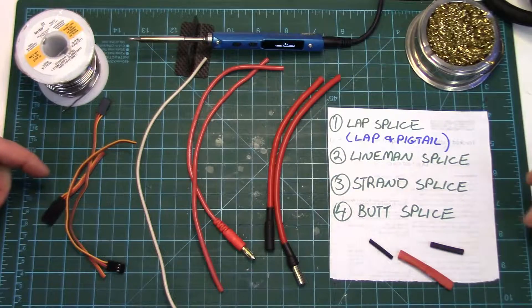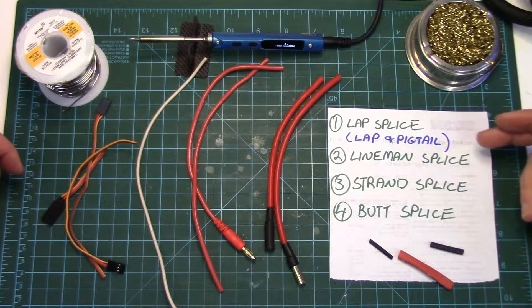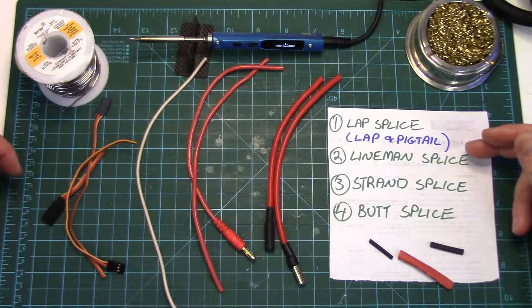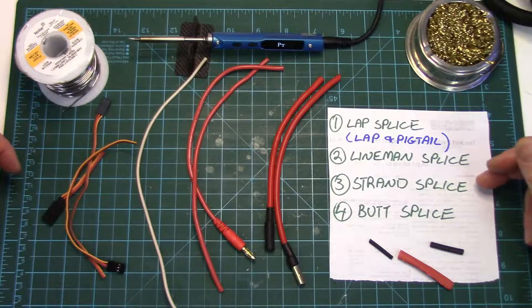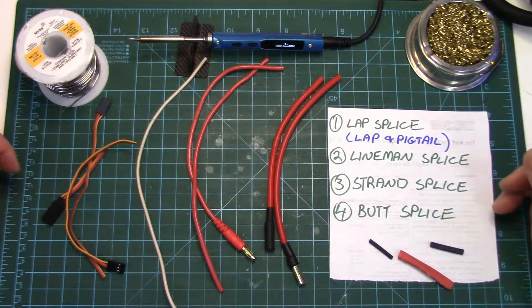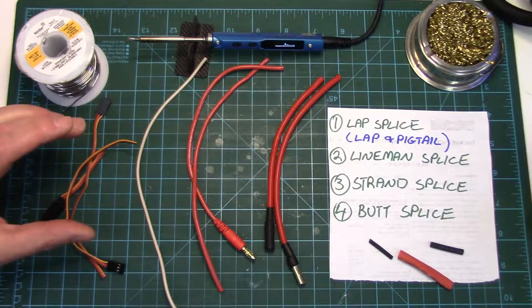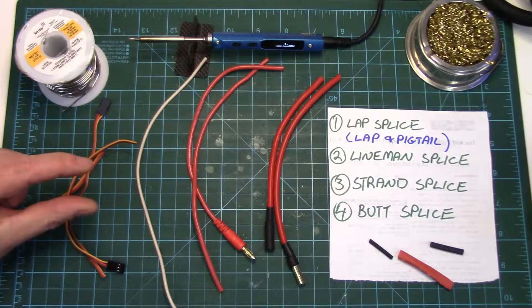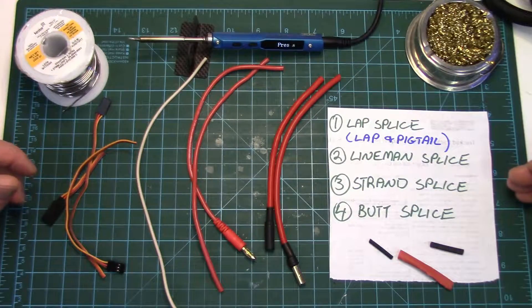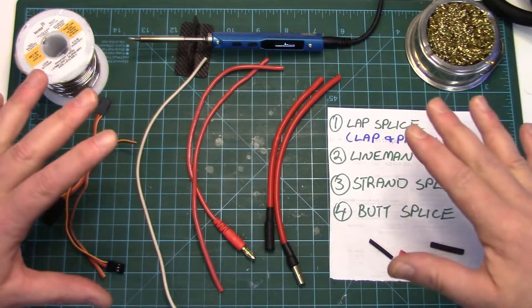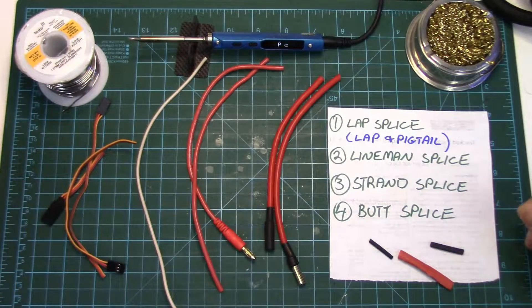Basically we're going to be taking them in order. We're doing a lap splice with a pigtail, a lineman splice, a strand splice and a butt splice. Depending on the size of wire you have, the length of wire you have to work with and the application will largely dictate what splice type you use. There's not one perfect splice for every wire and application.